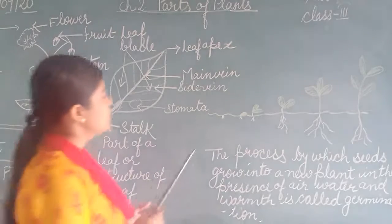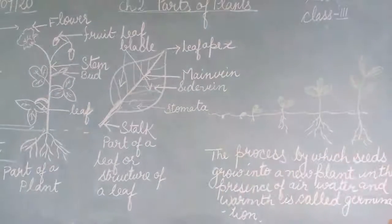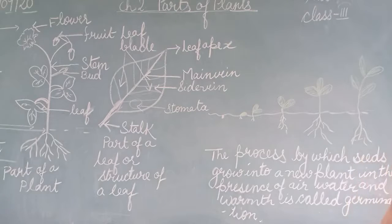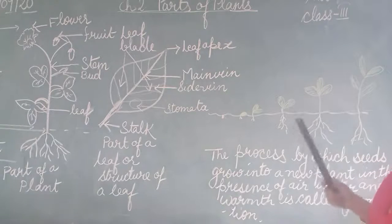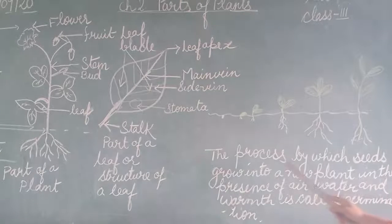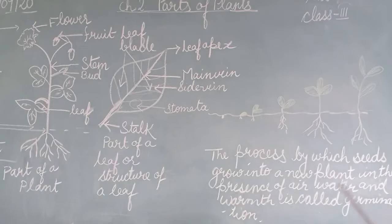Now, in this picture I have shown the process of germination. What is germination? The process by which seeds grow into a new plant in the presence of air, water, and warmth is called germination.